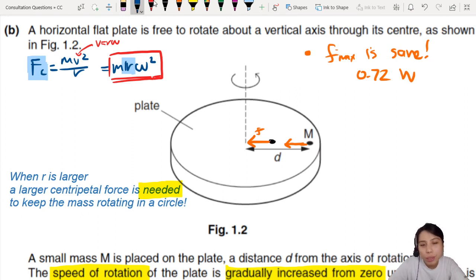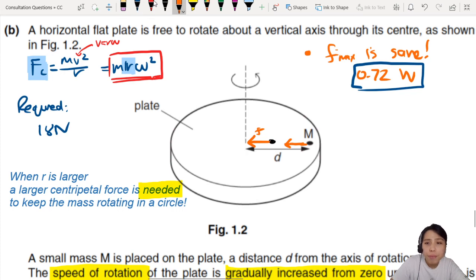Some may say, but how come F and R here says F is inversely proportional to R, but the one on the right says F is proportional to R? Actually this v here also has an R inside. If you want to compare the relationship between centripetal force needed and how far you are away, best to use the second equation. When R is larger, a larger centripetal force is needed to keep the mass rotating in a circle.